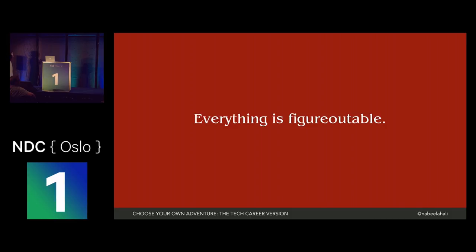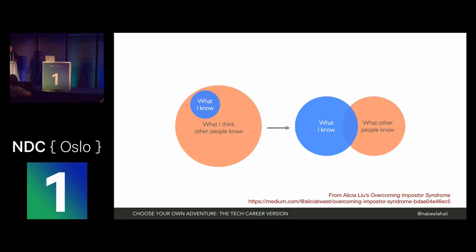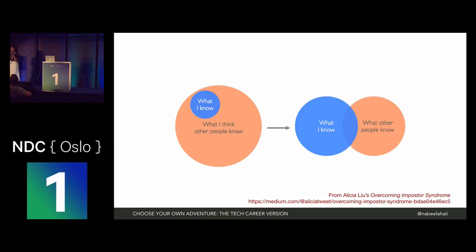Everything in our industry is figureoutable — if you ask the right questions and sit and try enough, you can work it out. But the problem with imposter syndrome is it can be so debilitating — if you don't think you're smart enough to get to the answer, you might not get there. This is from Alicia Liu's great Medium article, Overcoming Imposter Syndrome. She talks about imposter syndrome being like this: there's what you know and what everybody else knows, and you basically feel like everybody else knows everything you know and a whole lot more. But really the reality is more like the right side — there are things you know, things other people know, and you have an overlap. Nobody is perfect — everybody has something to teach you and you can teach something to everybody else.